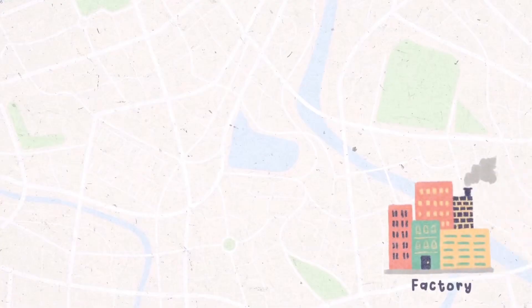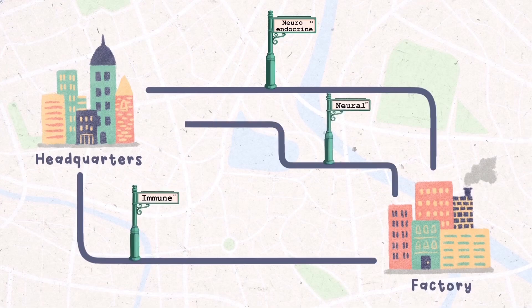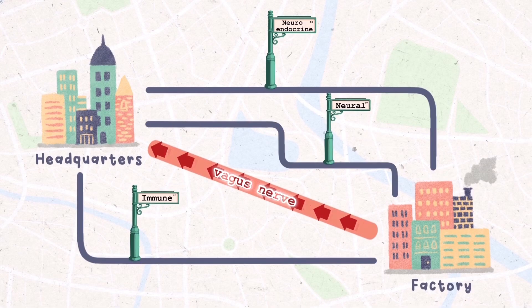Think of it this way. Your gut is a factory and your brain is the headquarters. These locations are connected by neuroendocrine, immune, and neural pathways. The main superhighway that sends messages back and forth is the vagus nerve.